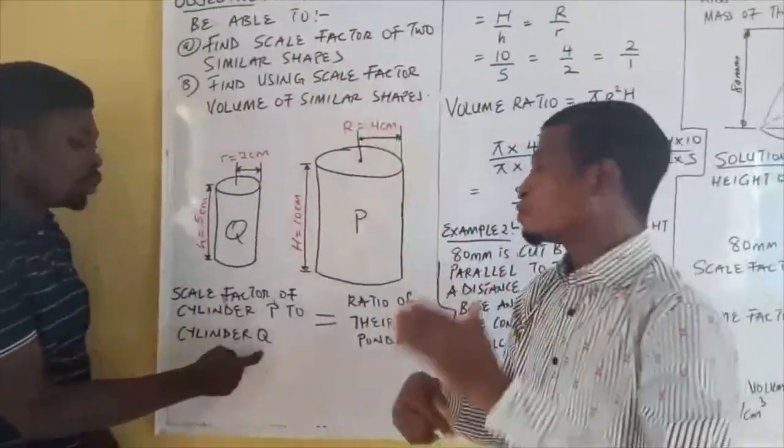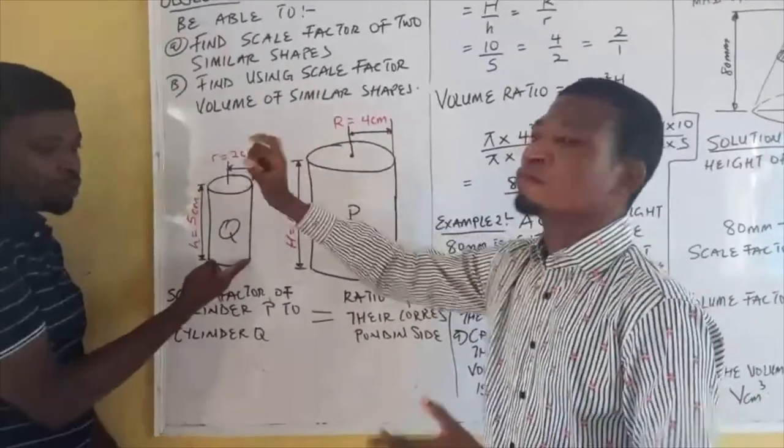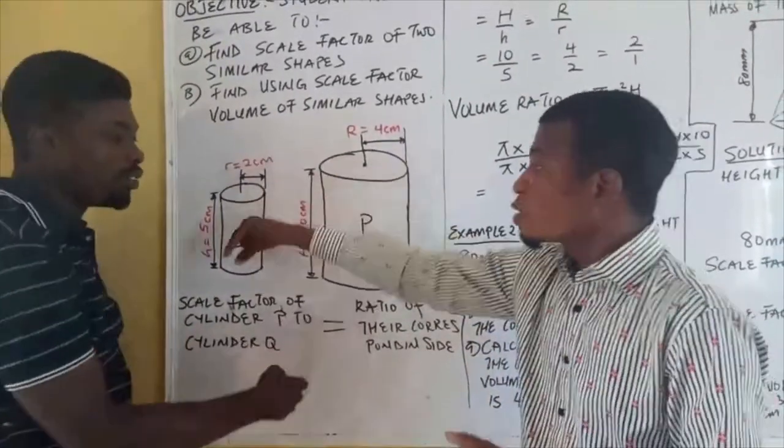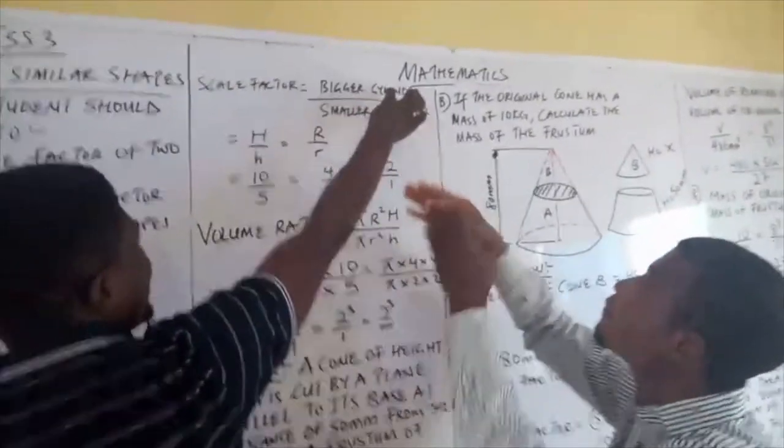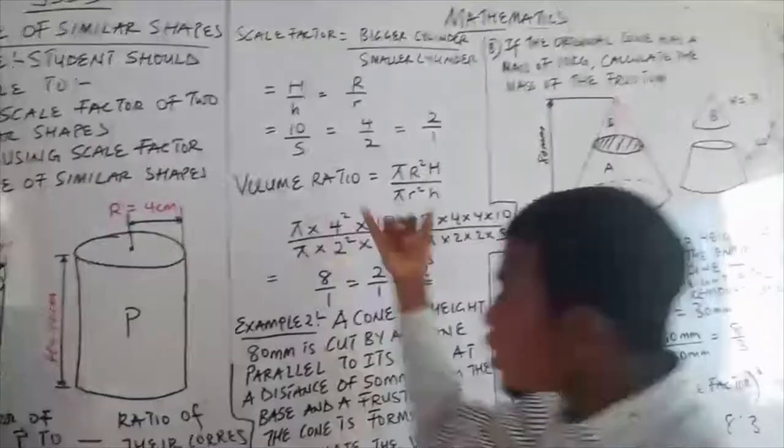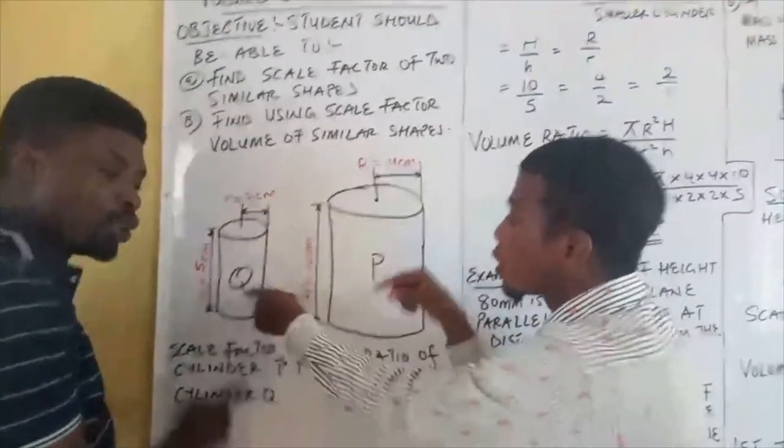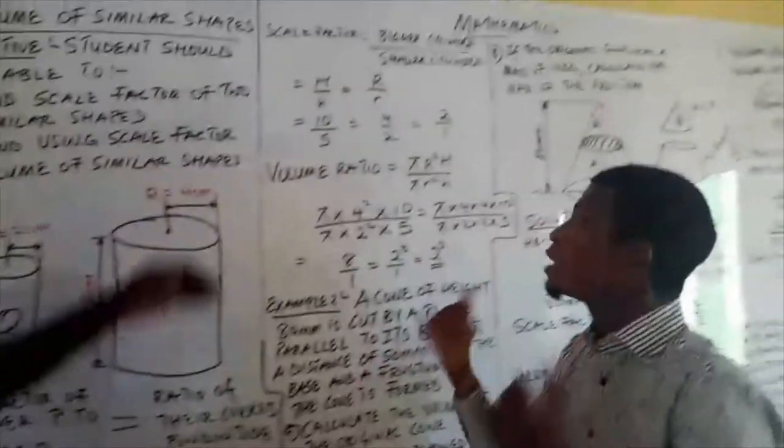But in case they give you a directive that P to Q, it simply means that your P is over the Q. So we have ratio of the corresponding size. The scale factor this time is the bigger cylinder over the smaller cylinder simply because it said P towards cylinder Q. I want you to get that point.